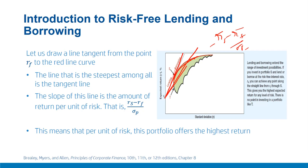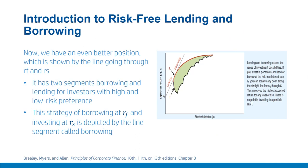Since this slope is the highest, position S offers maximum expected return for any given level of risk. All points on this tangent line offer the highest return per unit of risk compared to any other point on the efficient frontier. This ratio RS − RF / sigma_P is an important metric called the Sharpe ratio, used to measure the performance of a portfolio. We have obtained a new efficient frontier combining portfolio S with the risk-free instrument.